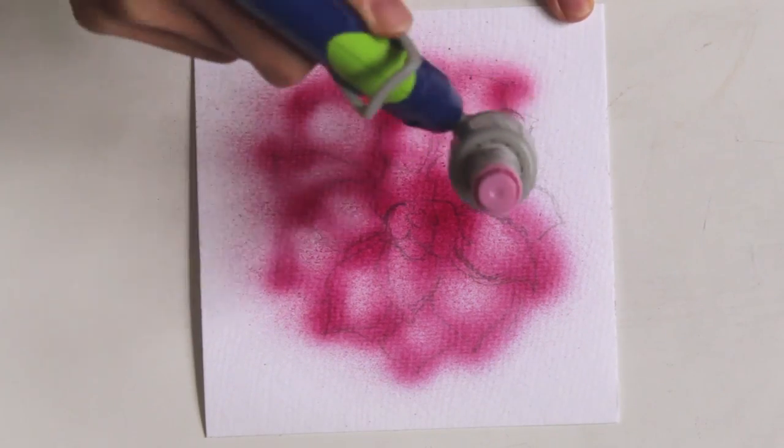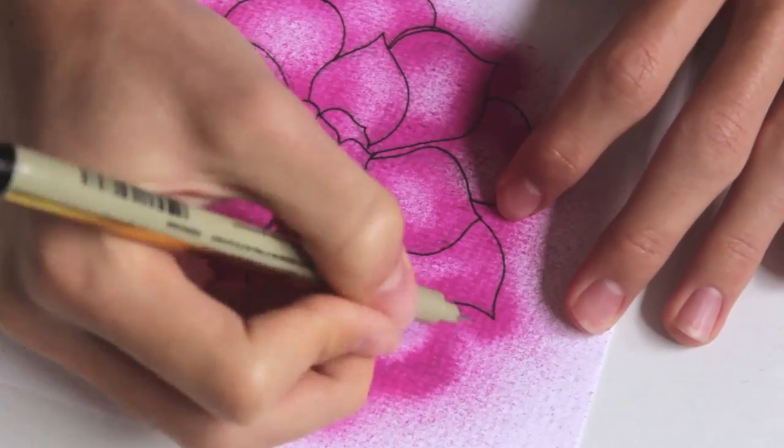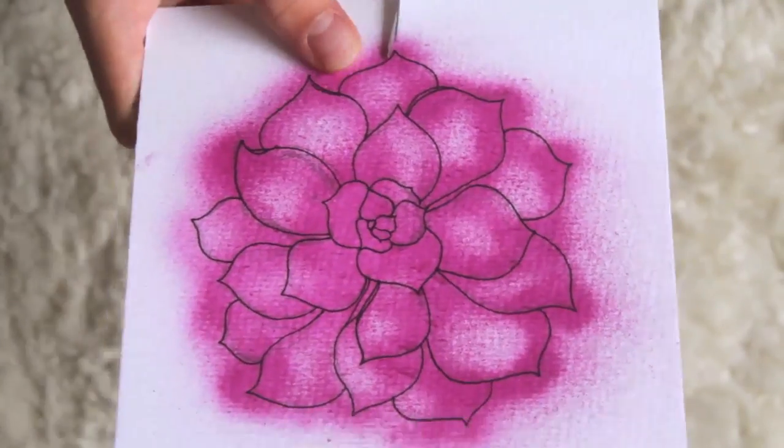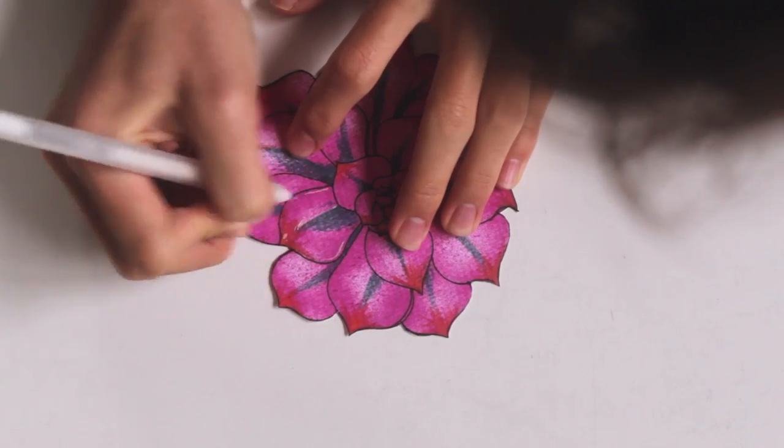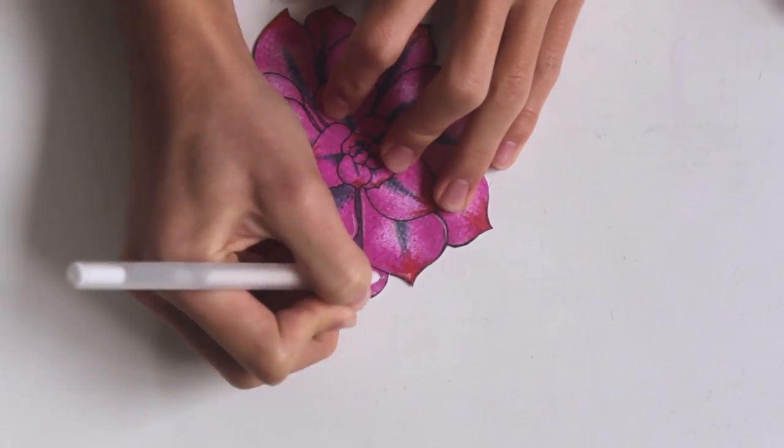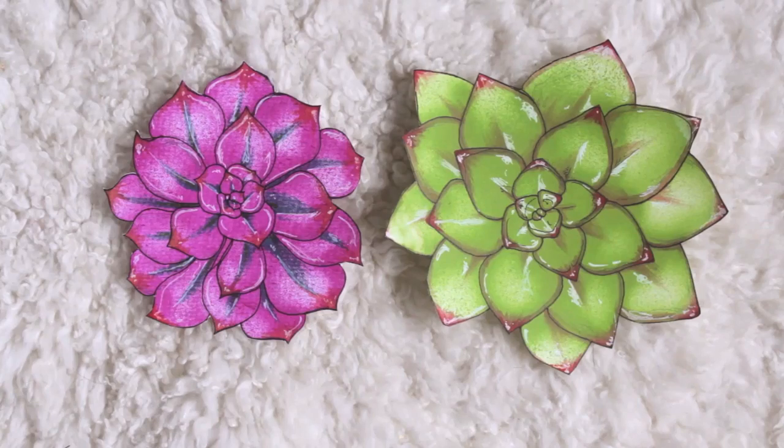This step doesn't need to be too neat because we're going to outline next. Once the marker is dry, you can start outlining the succulent with a thin pen. Next, cut off all the excess paper. And lastly, customize! I like to make the tips of the leaves a little accented just by coloring with some markers. I also like to add highlights with a white paint pen. And you're done!